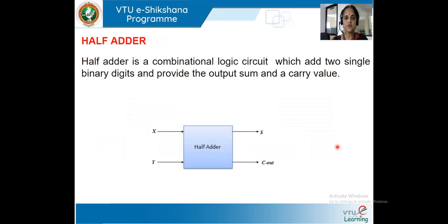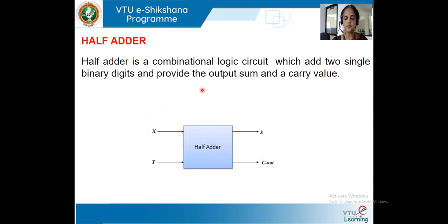In the case of a half adder, we have two inputs, X and Y, and two outputs: sum and carry. A half adder is a circuit that is able to add two single binary digits and provide sum and carry. This is the block diagram of the half adder.